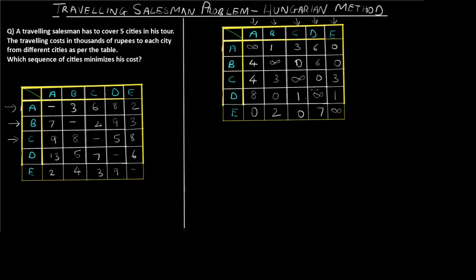Steps 1 and 2 are complete. For step 3, we find all positions where we have a 0 and mark them. Then we find the solution by zero assignment. The problem is: each city must be visited exactly once — the salesman travels to each city only once and must return — so we need to find a complete loop.